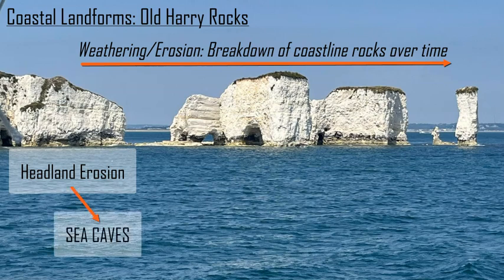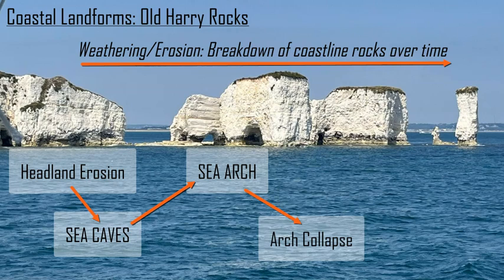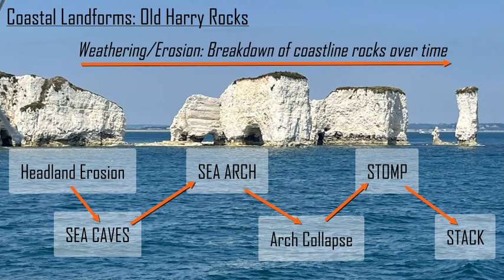Sea caves over time will continue to break down and grow larger to form a sea arch. That arch will then collapse under the weight of the rock above it, forming its own separate and isolated stack. The stack will slowly break down through erosion at its base, collapse, and form a stump. Eventually, the stump will be eroded and weathered away until it goes under the ocean — much like a volcano becoming a seamount and atoll. Same process.